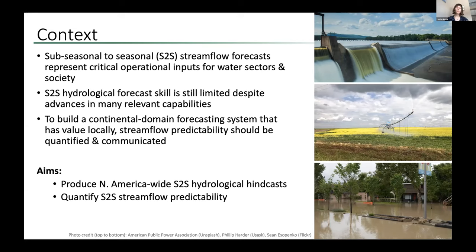Sub-seasonal to seasonal streamflow forecasts represent critical operational inputs for many water sectors — hydropower generation, reservoir management, agriculture, and flood early warning and mitigation. But sub-seasonal to seasonal hydrological forecast skill is still limited despite many advances. To build a continental domain forecasting system that has value locally, we first have to understand, quantify, and communicate that streamflow predictability. Our aims are twofold: produce North America-wide sub-seasonal to seasonal hydrological hindcasts, and quantify the streamflow predictability.